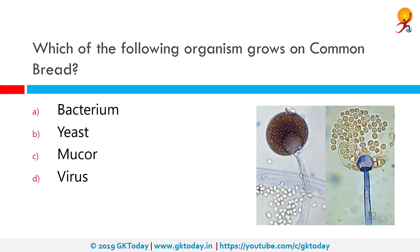Which of the following organisms grows on common bread? The correct answer is Mucor. Mucor is a microbial genus of approximately 40 species of molds, commonly found in soil, digestive systems, plant surfaces, some cheeses like Tome de Savoie, rotting vegetable matter, and iron oxide residue in the biosorption process.